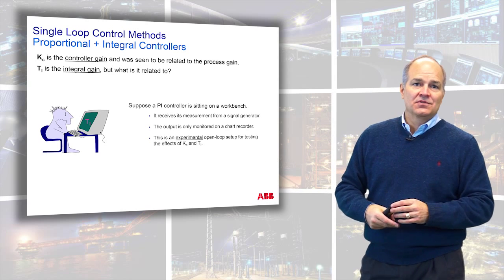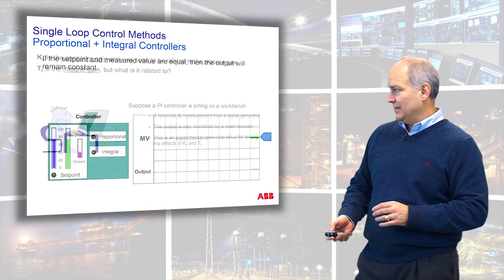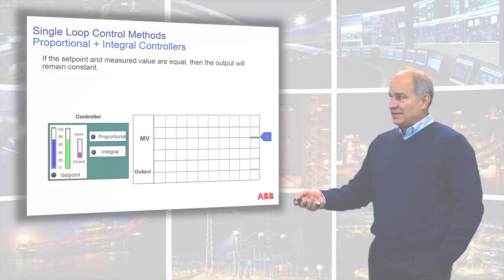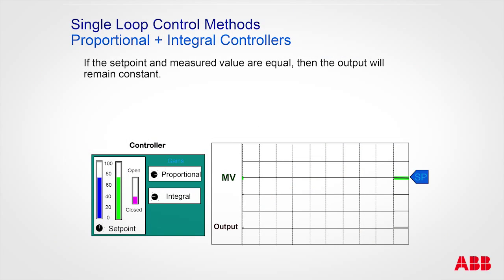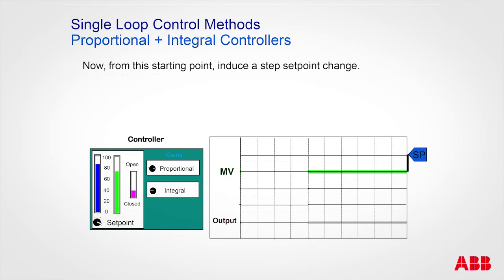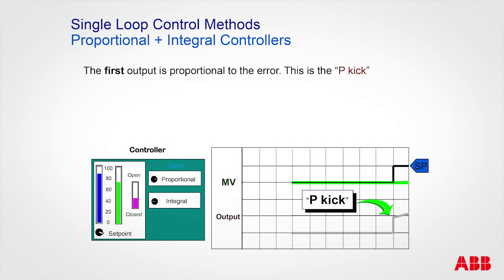At the end of this series I'll show different types of controllers. Here's the experiment: you walk up to a bench-mounted controller with no process. When the set point and measured value are right on top of each other there is no change in output. Then you change the set point and get an initial kick - that's from the proportional.